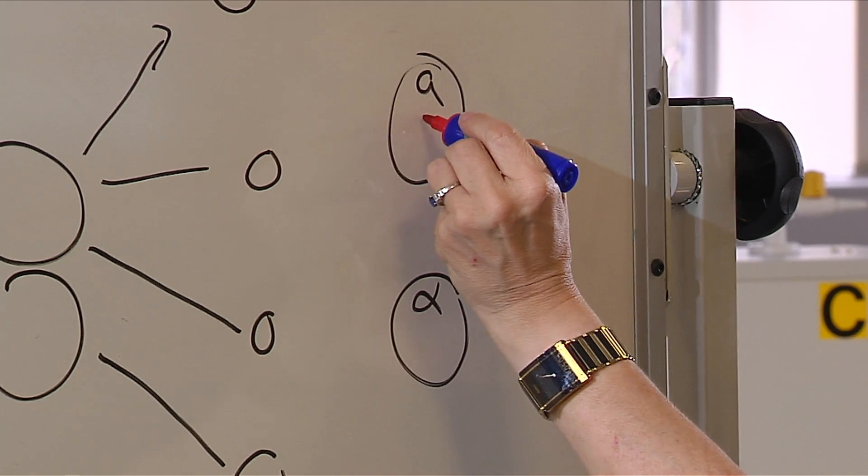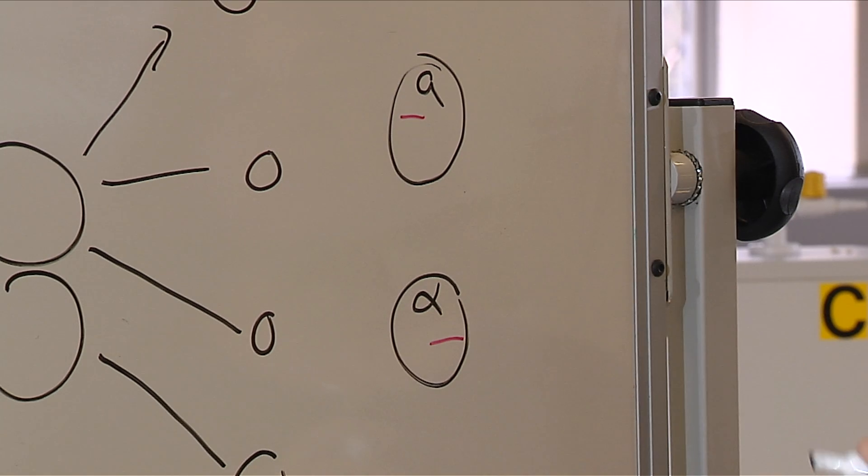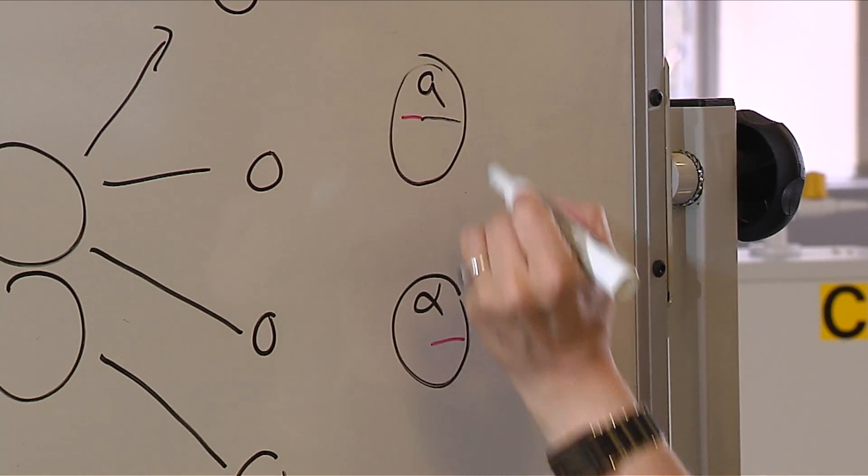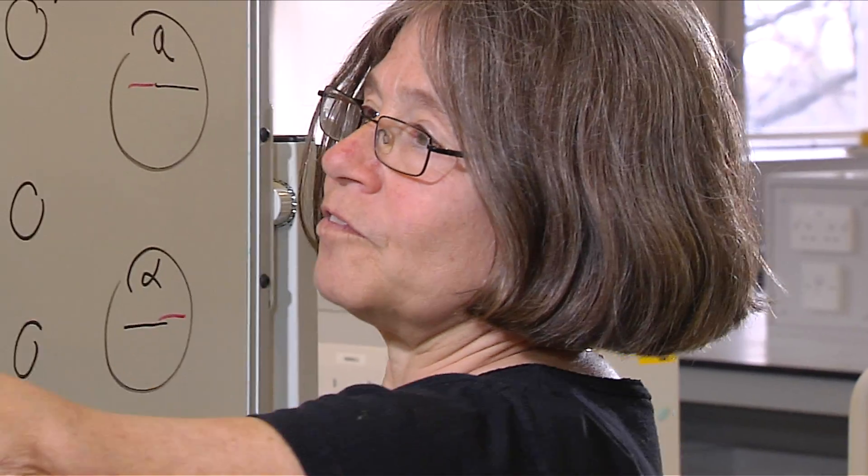The two in the middle have what we call recombinant chromosomes. They have a little bit of red and a little bit of black. And how we get from here to here is what I study in my laboratory.